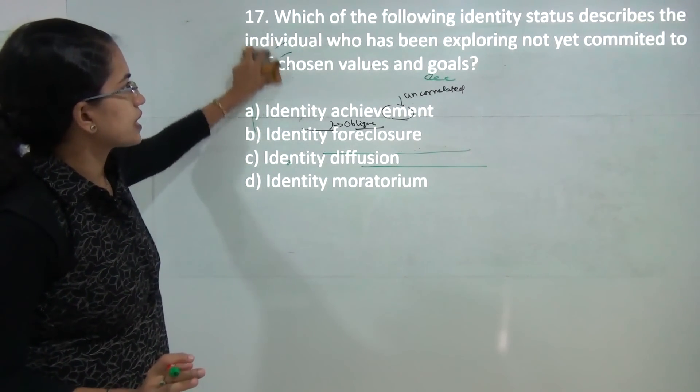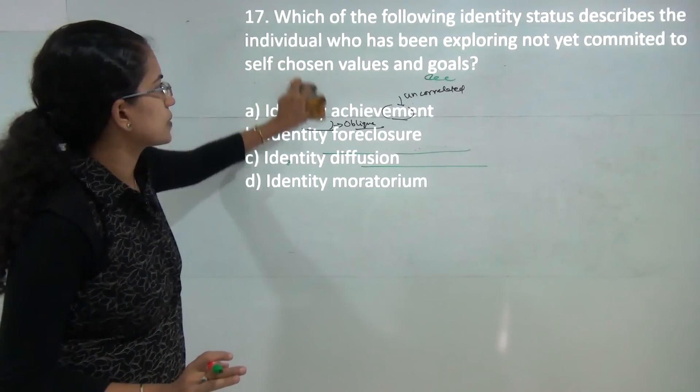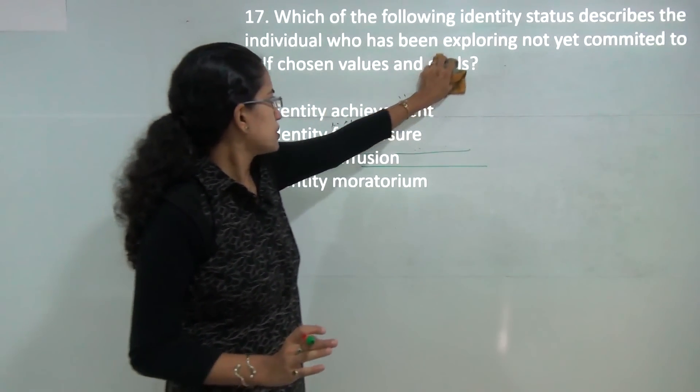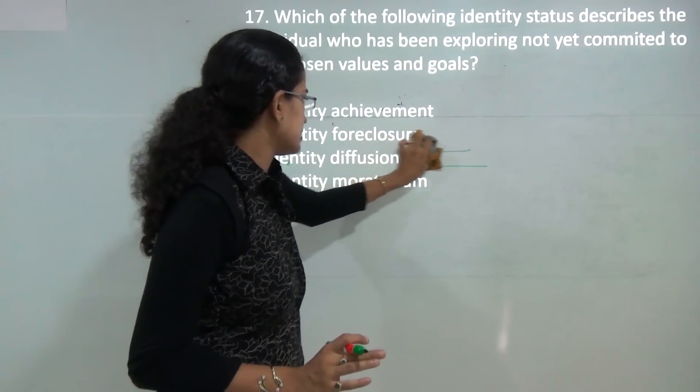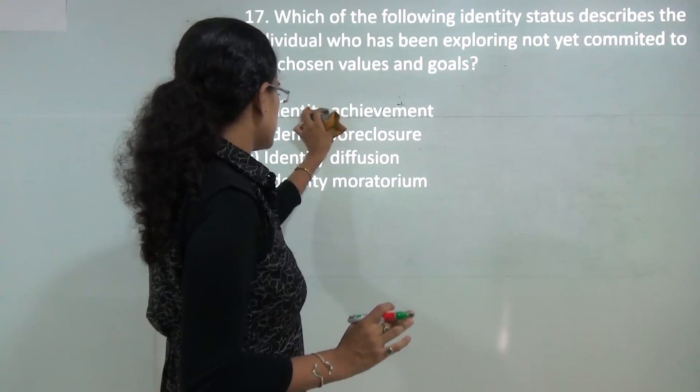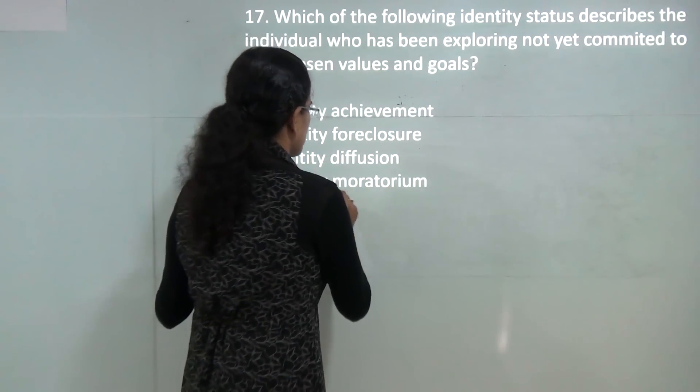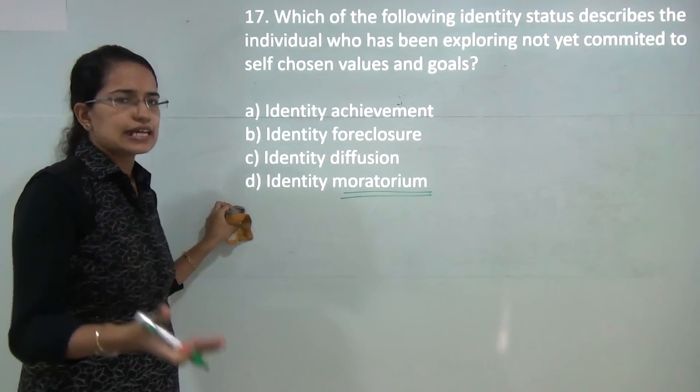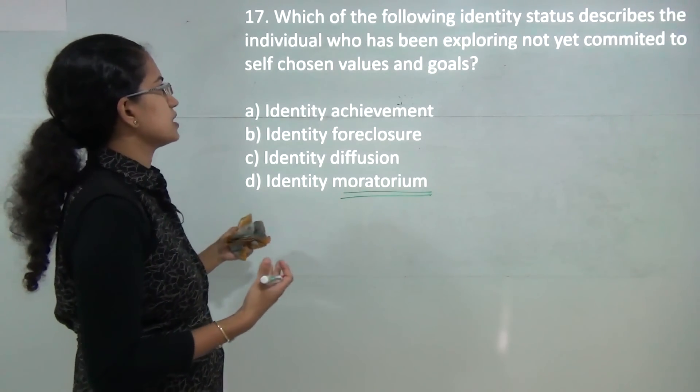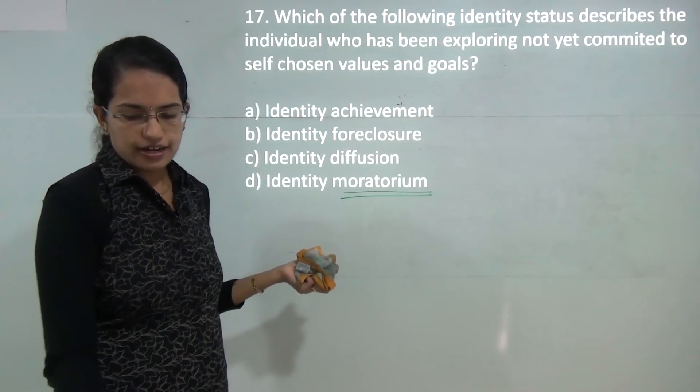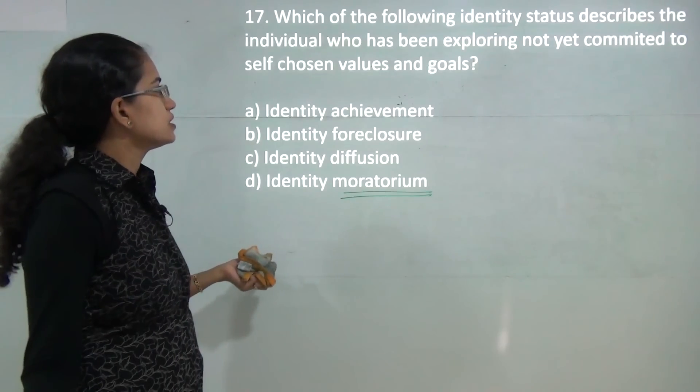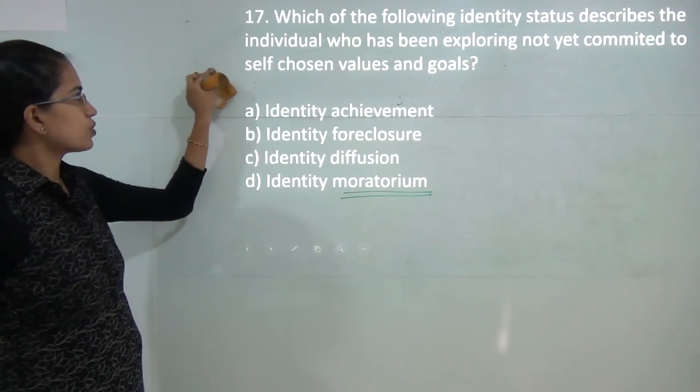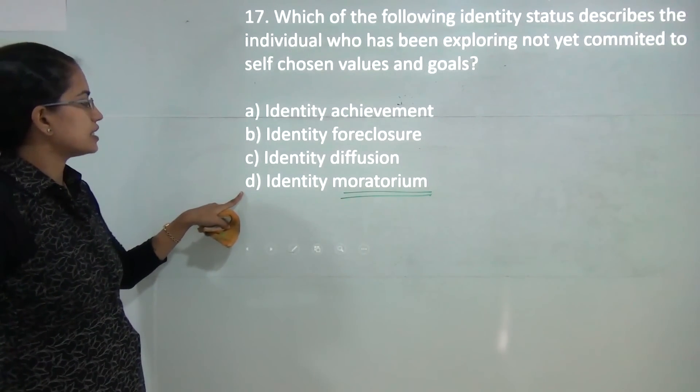Next question: which of the following identity status talks about individuals. These are the four identity status that we will discuss in detail in a separate session. Now moratorium is a method or is an identity status that talks about exploring things which are not yet committed and the goals for which are not yet chosen. So that's what is the correct answer for this: D.